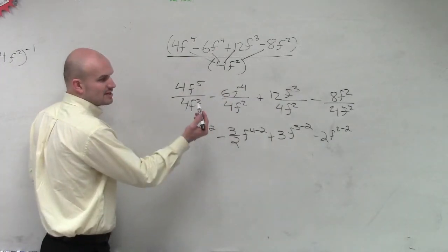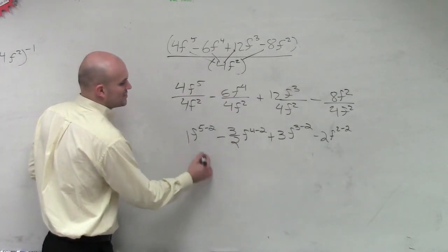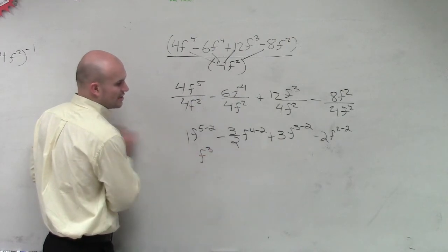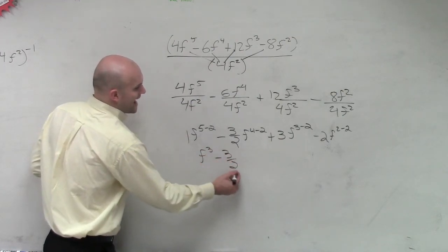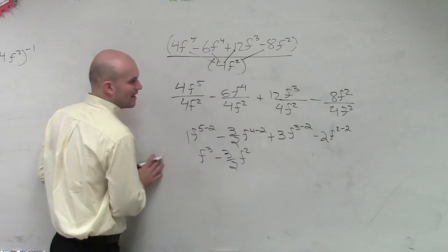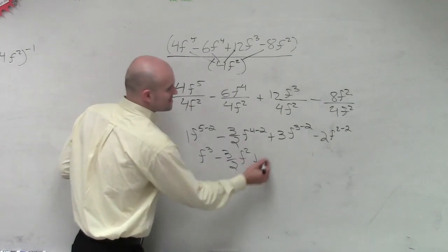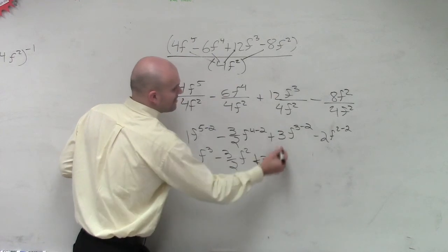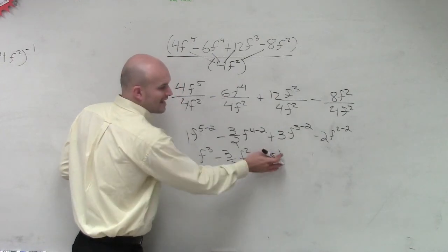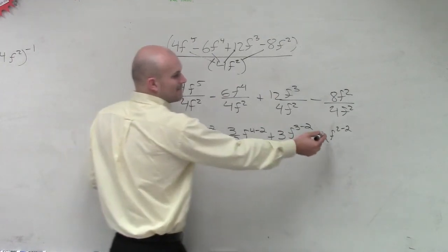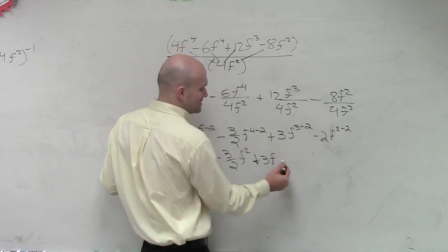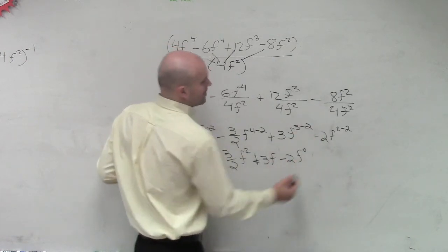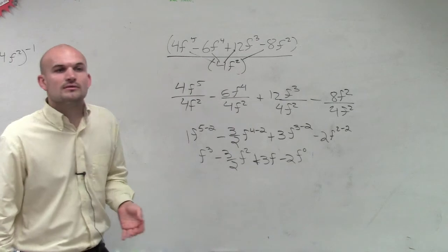Then 1 times f is just going to be f. f to the 5 minus 2 is f to the third, minus 3 halves f squared, plus 3 times f to the 3 minus 2 is 1, which again, we don't need to write that. And then minus 2 times f to the 0, but we know that f to the 0 is just what? 1.